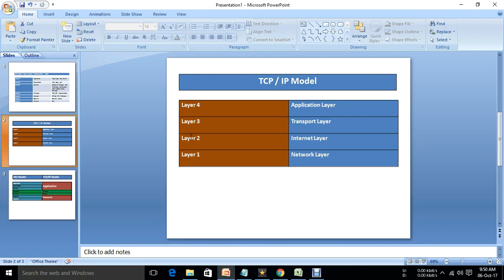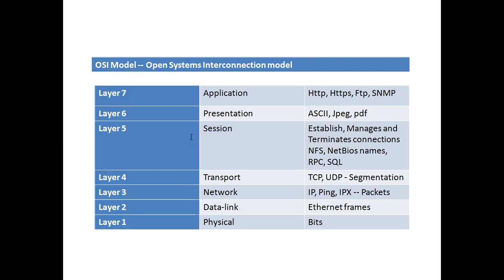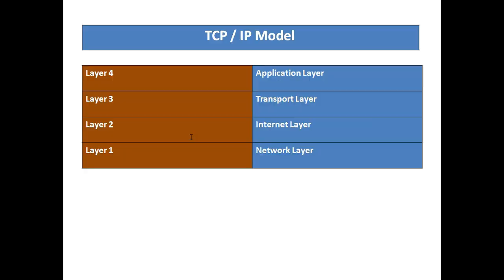The TCP & IP Model has 4 layers: the network layer, internet layer, transport layer, and application layer. In the OSI Model, there are 7 layers. If you see the working process, the two are the same. This is the layer-wise comparison.